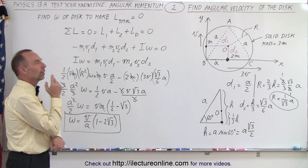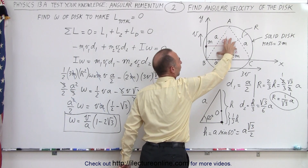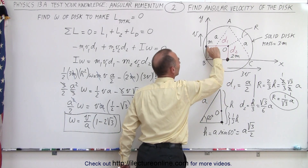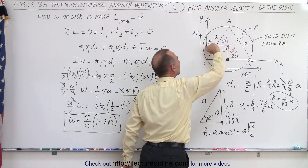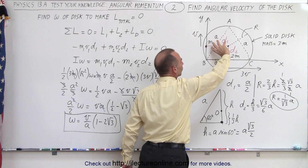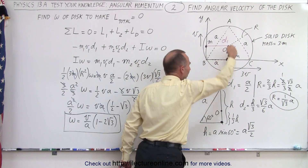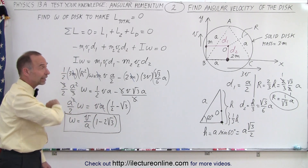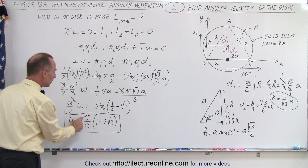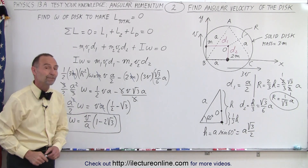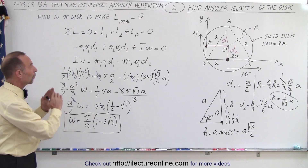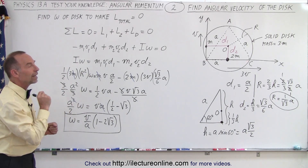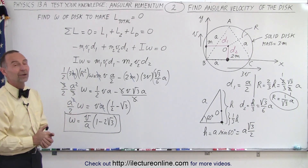So omega equals (v/A)·(1 − 2√3). Notice the disk must turn in a clockwise direction because the disk has the largest moment of inertia. The 2m mass provides a positive angular momentum and the m mass provides a negative angular momentum. Since 1 minus 2 times the square root of 3 is a negative quantity, this confirms the disk is indeed rotating clockwise. The angular velocity of the disk is omega equals (v/A)·(1 − 2√3), and when we add up all three angular momentums — of m, 2m, and the disk — we get zero.